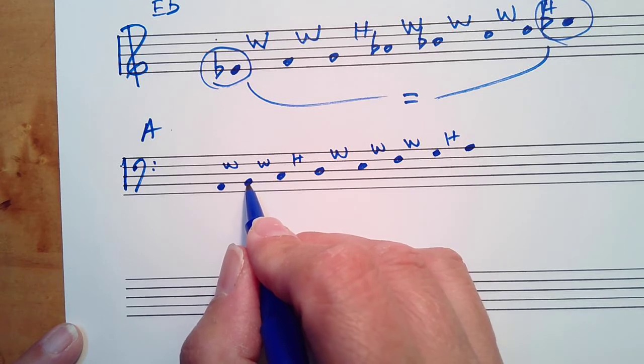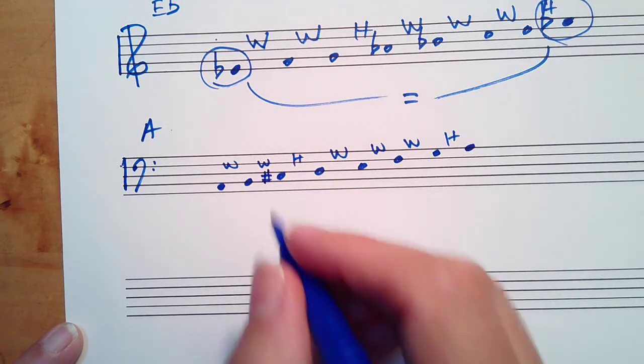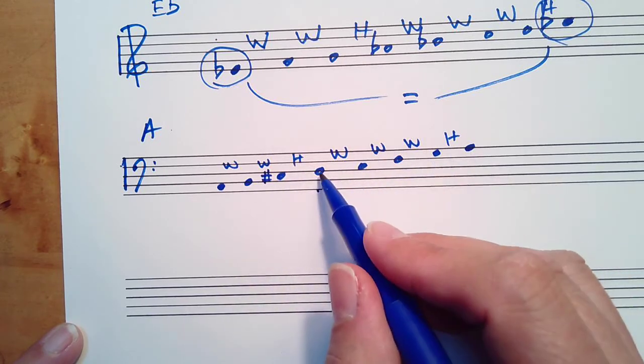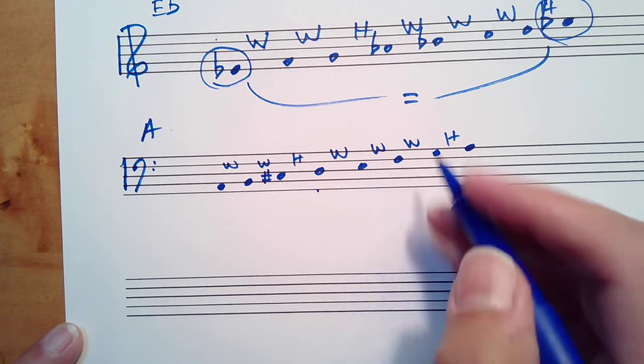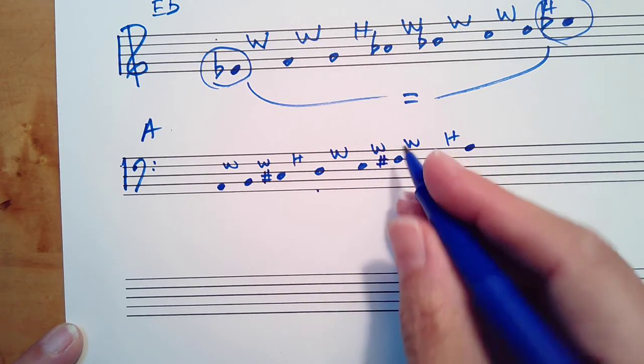A whole step up from B would be C sharp. Half step from C sharp to D, that's good. Whole step up is E. Whole step up is F sharp. Whole step up from F sharp is G sharp.